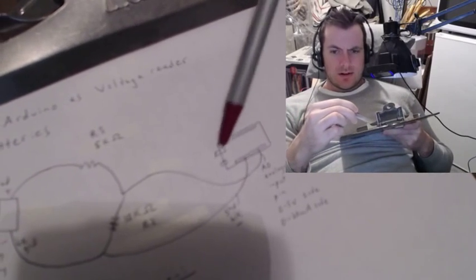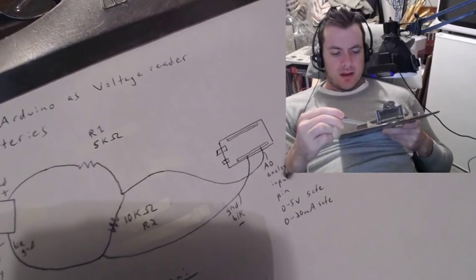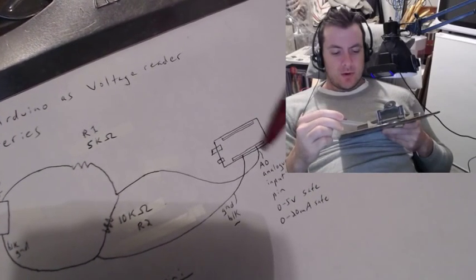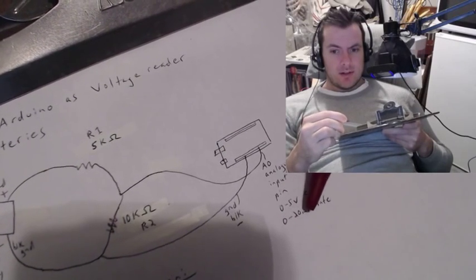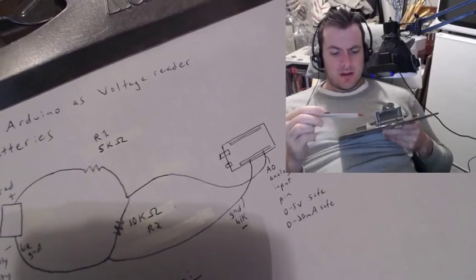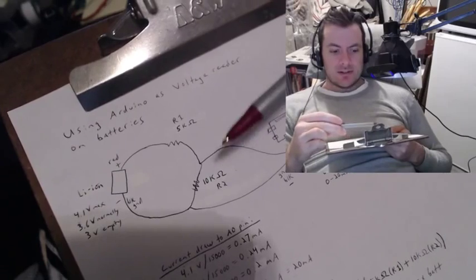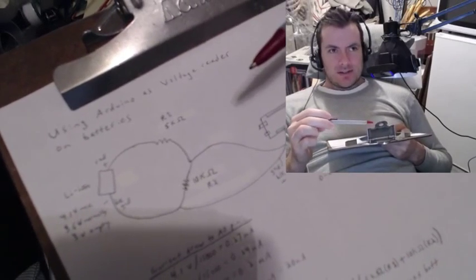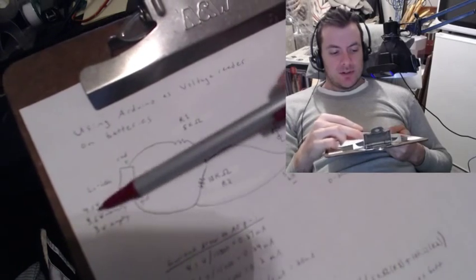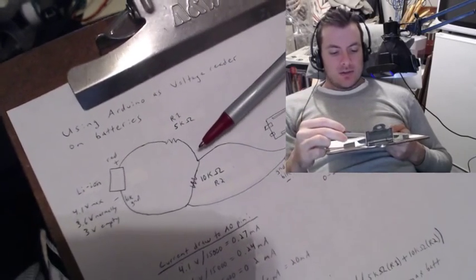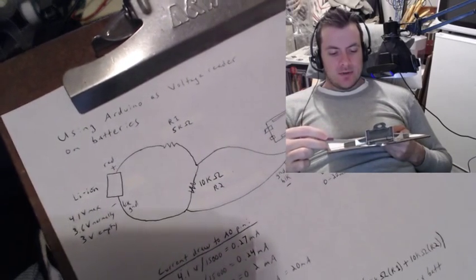Here is the Arduino. Here is the A0 analog input pin. And for an analog input pin, 0 to 5 volts is safe, and 0 to 20 milliamps is safe. Now, this circuit is called a voltage divider. A voltage divider can be used to make a larger voltage coming from your battery into a voltage small enough for the analog input pin to handle.